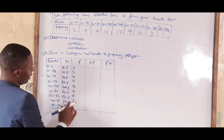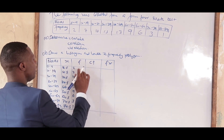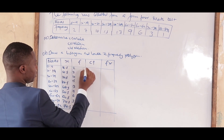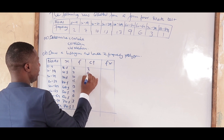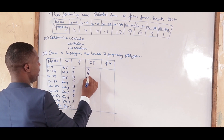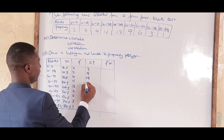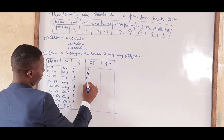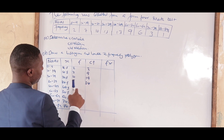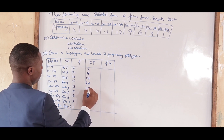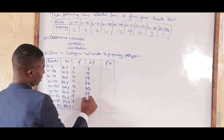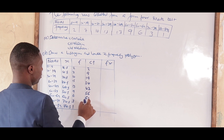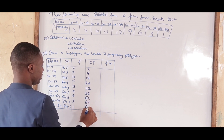The cumulative frequency (cf) is the running total of the frequencies: 2; 2+7 = 9; 9+10 = 19; 19+15 = 34; 34+13 = 47; 47+9 = 56; 56+6 = 62; 62+3 = 65; 65+1 = 66.